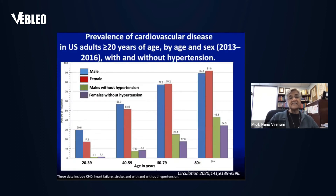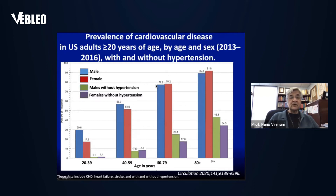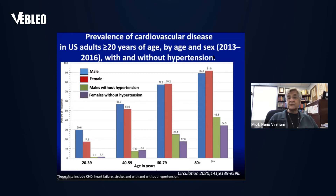This shows the prevalence of cardiovascular disease in U.S. adults more than 20 years of age by age and sex, divided into columns: 20 to 39, 40 to 59, 50 to 79, and 80 plus. Males are in blue, females in red, males without hypertension in green, and females without hypertension in purple. The majority of people with cardiovascular disease have hypertension, and it dramatically increases beyond age 50, almost doubling in numbers.